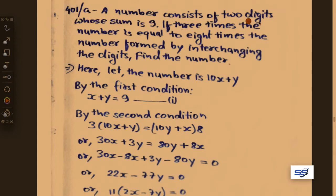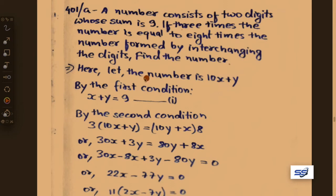A number consists of 2 digits whose sum is 9. If 3 times the number is equal to 8 times the number formed by interchanging the digits, find the number. To solve this problem we should assume certain things. Let the two-digit number be 10x plus y.